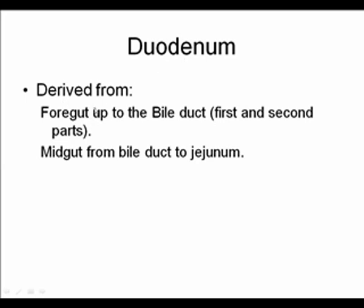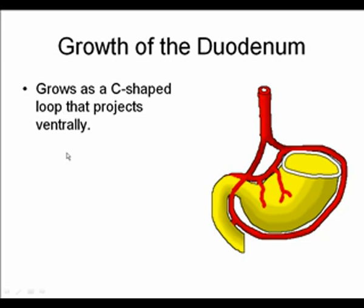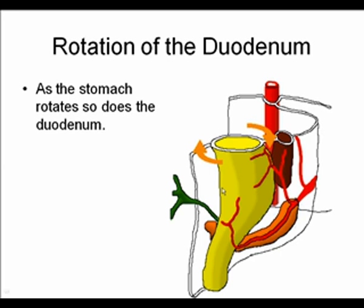The duodenum is derived from the foregut up to the region where the bile duct enters the second part of the duodenum. The rest of the duodenum — from the second through the fourth parts — is derived from the midgut. As the stomach rotates to the left and the pyloric region moves right and cephalically, it throws the duodenum to the right side, so the duodenal loop comes to lie not in the midline but in the right paravertebral gutter.